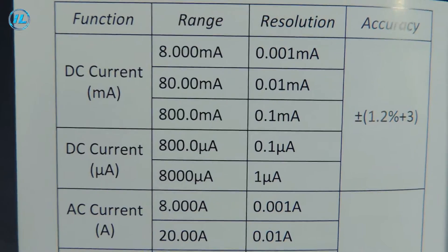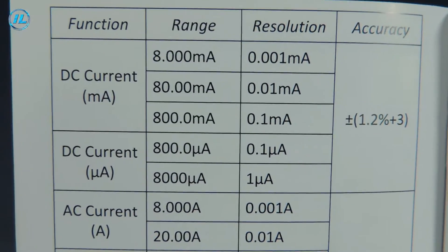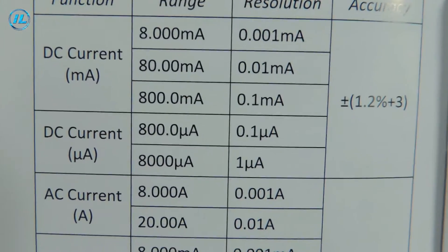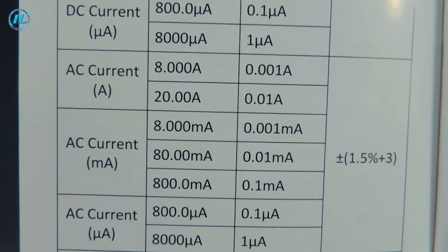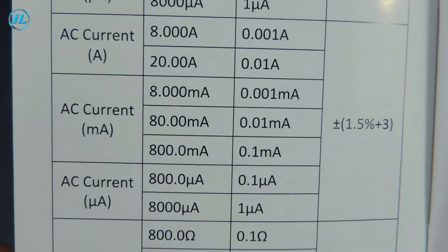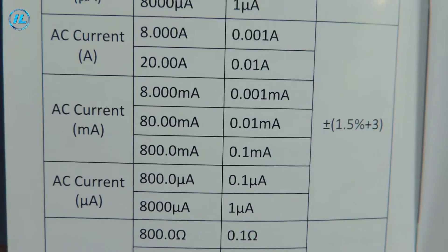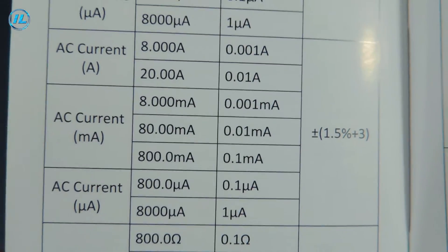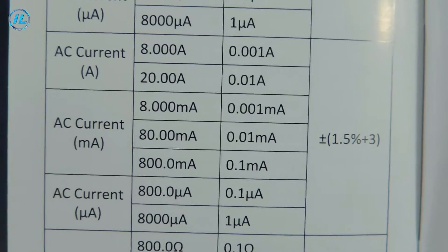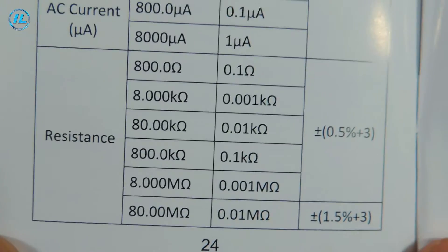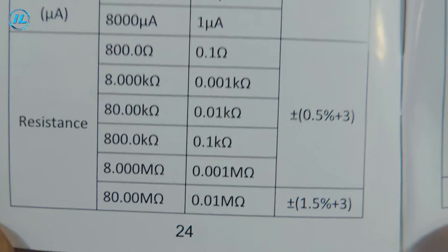It is also indicated here that this multimeter can measure direct current of very small values, that is microamps. Alternating current up to 20 amperes and also very small currents, microamps. The margin of error in all ranges will be 1.5%.